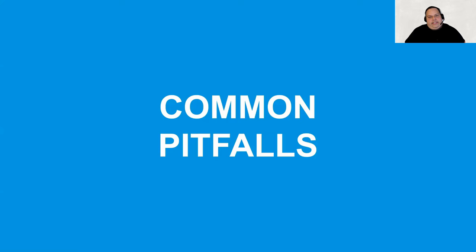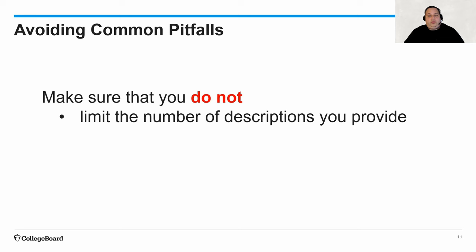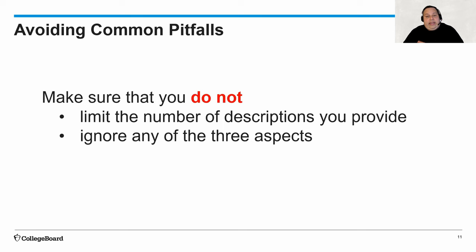Look at the list of adjectives you just created and see if you fall into any of these pitfalls. We want to make sure we do not limit the number of descriptions we provide. If your teacher asks for characterization, the goal is not to come up with just one word. Is there a single word that could describe you, or your best friend, or your mom or dad? Probably not — these are complex individuals. We want as many words as possible, but we also want to make sure we don't ignore any of the three aspects: physicality, emotional state, and psychological state.